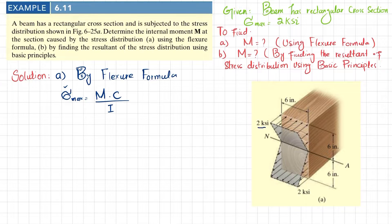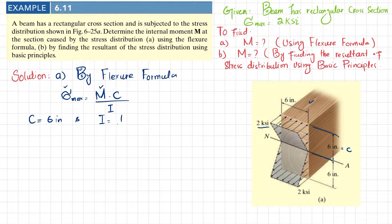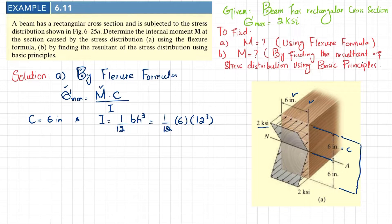We have the maximum stress which is 2 ksi. We need to find the moment M. C is the distance from the neutral axis to the topmost layer, so c equals 6 inch. For a rectangular cross section, I equals (1/12) b h³ = (1/12) × 6 × 12³. The total height is 12 inch. Calculating this gives I = 864 inch⁴.